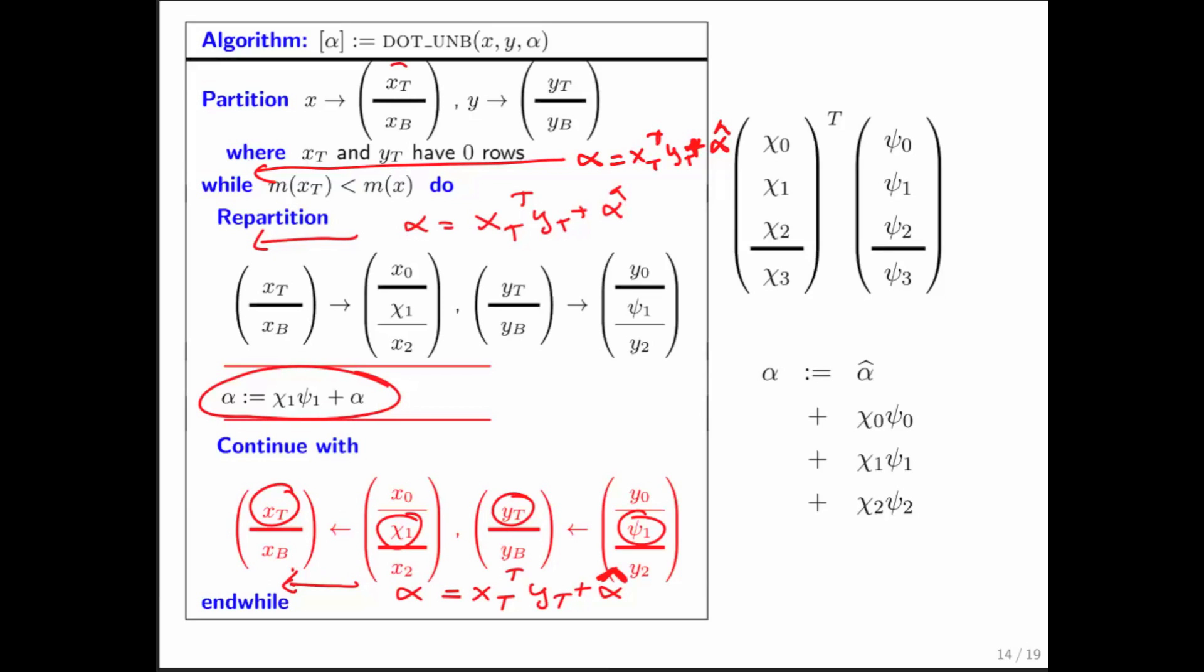Why is that? x top and y top are empty. If you take the inner product of empty vectors, you get zero. Alpha here at the top holds its original contents alpha hat. All we're doing here is repartitioning the vectors, and therefore alpha here still is equal to alpha. Alpha is still equal to alpha at this point, but that's okay because these vectors were empty, and therefore x top transpose y top is equal to zero.